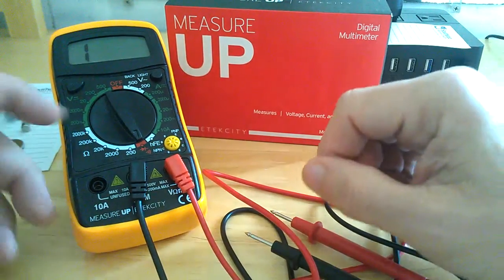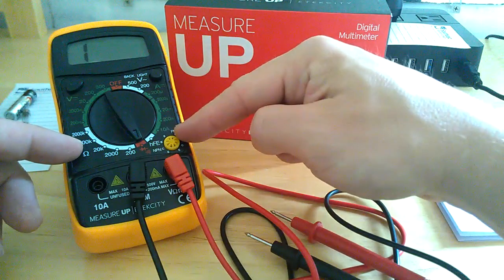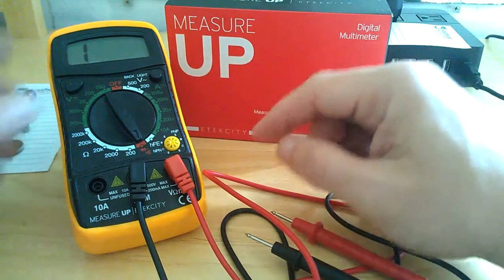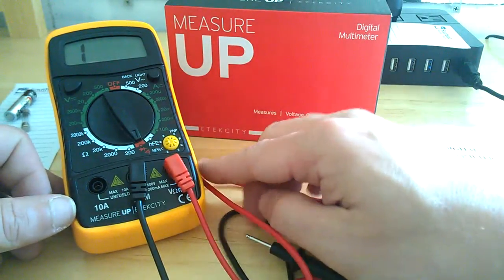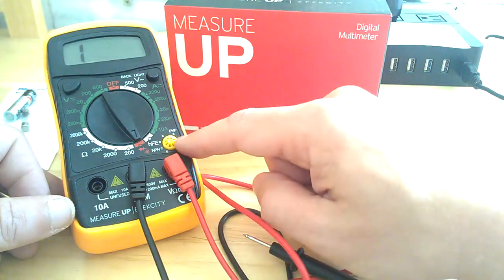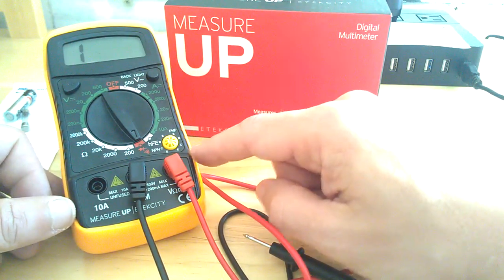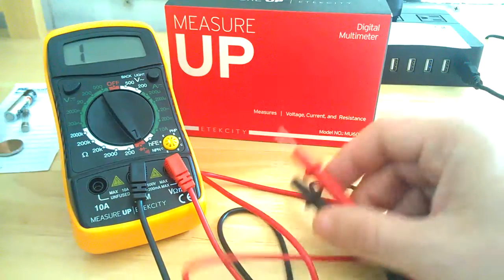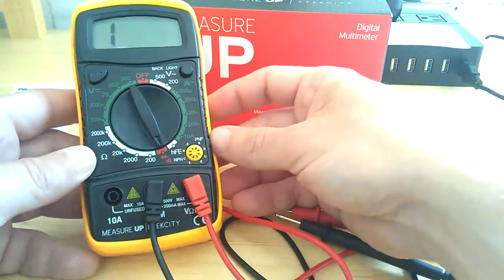It'll also do resistance, and it'll do, over here, and it'll do your ohms, and all the ranges are listed around the side. Very nice meter. It's got a hold feature, as well. And it has up to 10 amp measurements. It'll also do capacitors and stuff down here. You just put them into your PNP or your NPN slots there. Really nice meter. Really handy. It's quite compact. I like that.